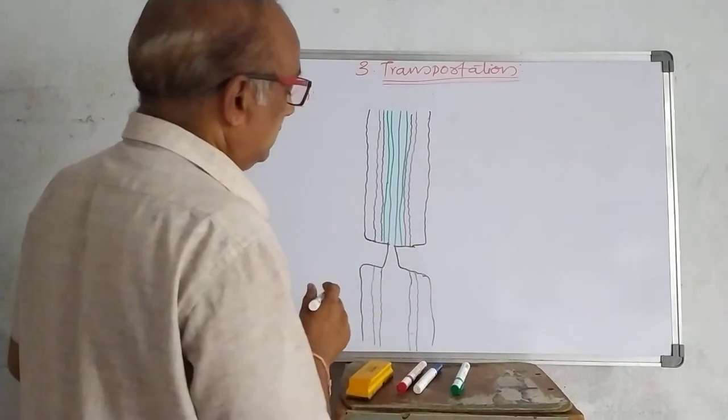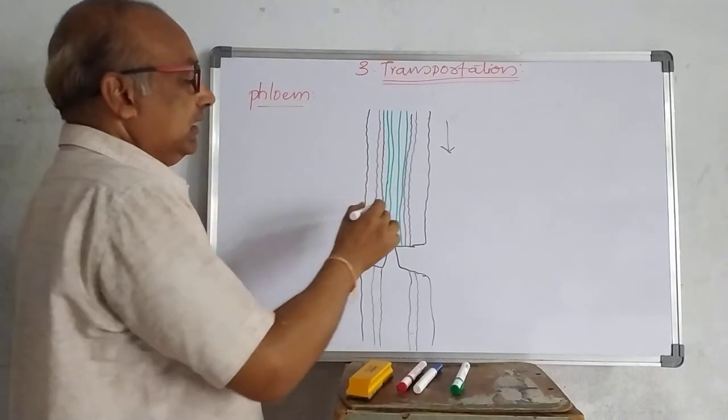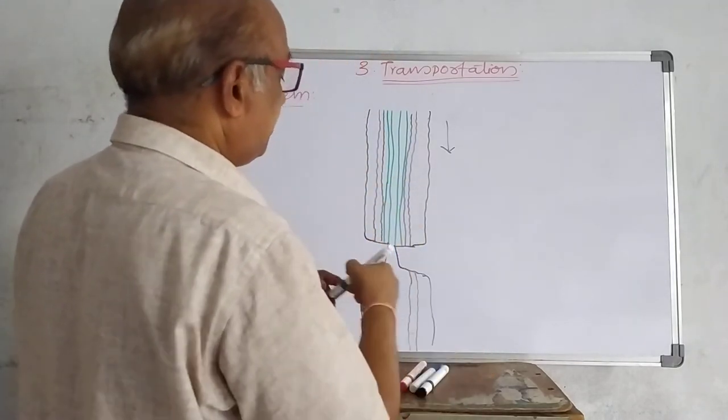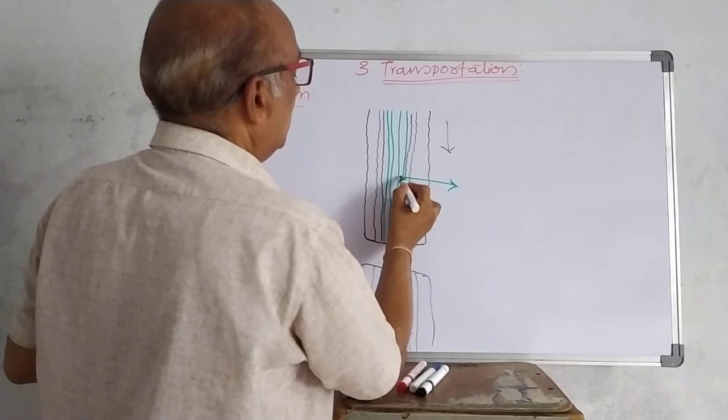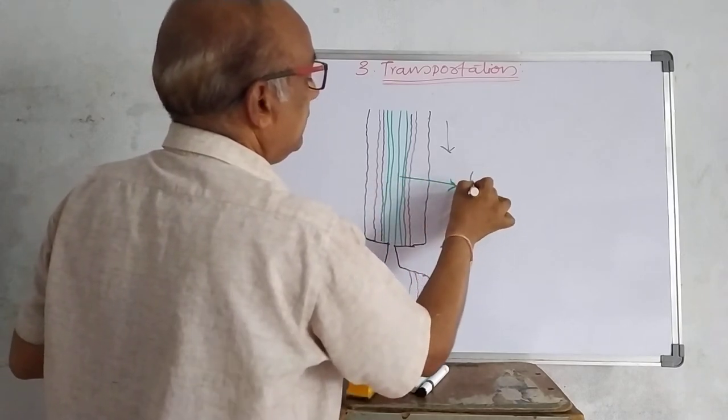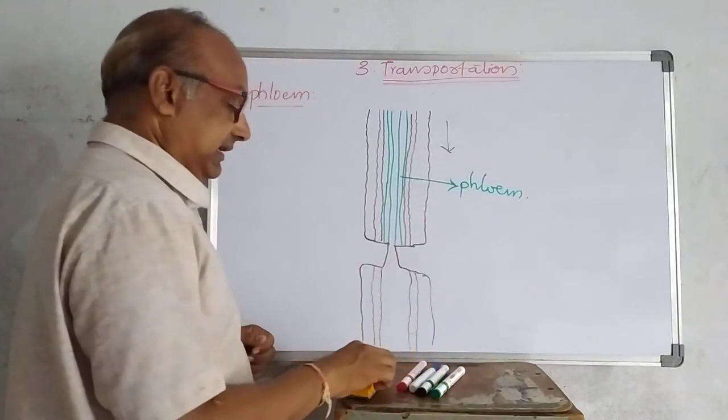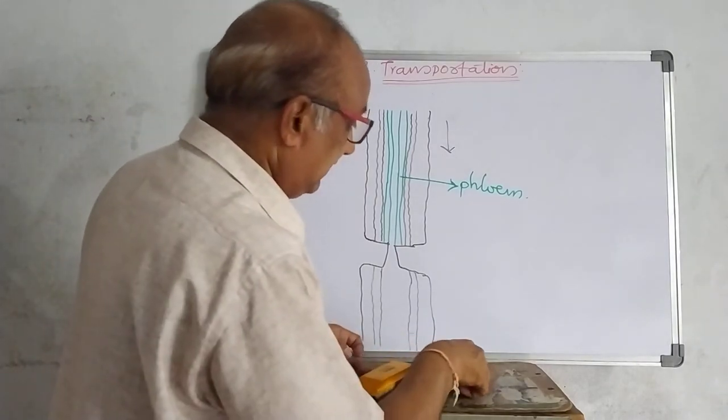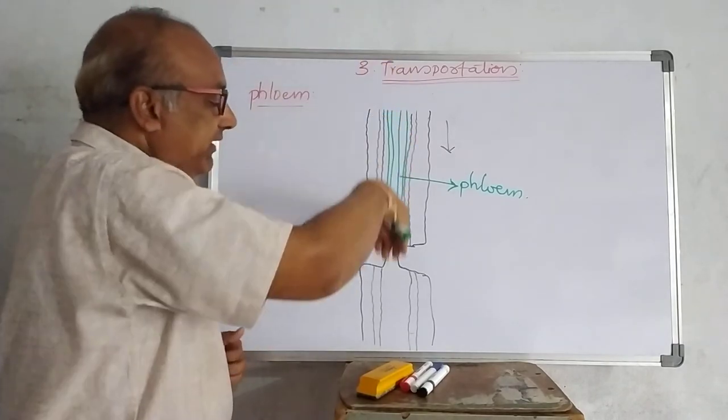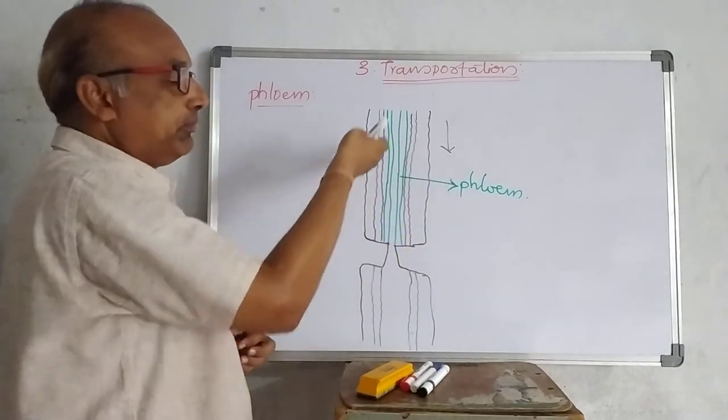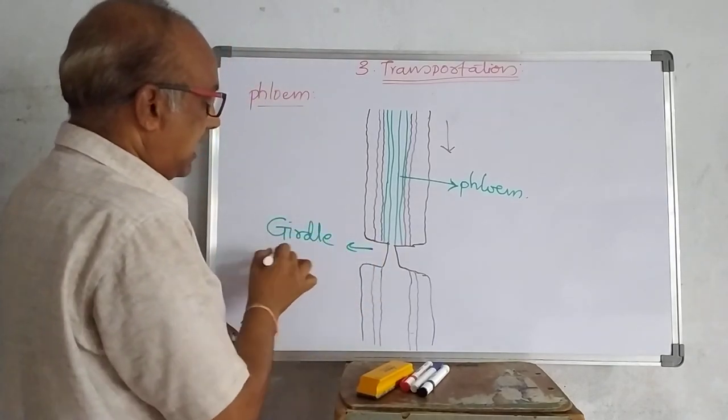Such that the food materials from the top portion are not moving down. Which one is phloem tissue here? This is the phloem tissue. Okay. Phloem tissue is completely cut off. And when this phloem tissue is completely cut off, the food materials from the shoot system is not moving down because there is no continuation of phloem from up to down. Here there is a cut, or what we can say this is called girdling or cut portion.